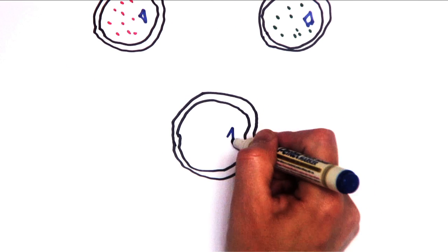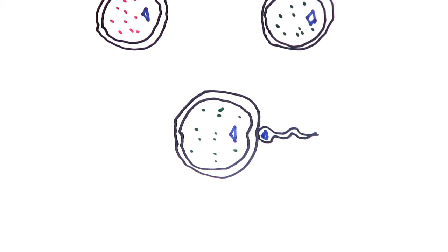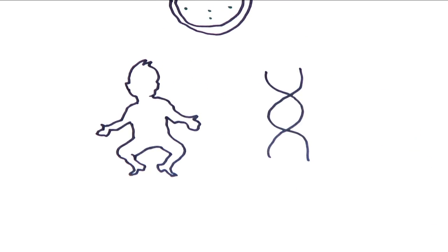Inside both eggs is a spindle of chromosomes, which is what fuses with the chromosomes of a sperm to eventually create the child's nuclear DNA.